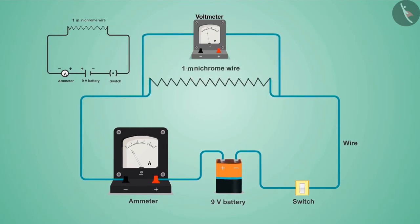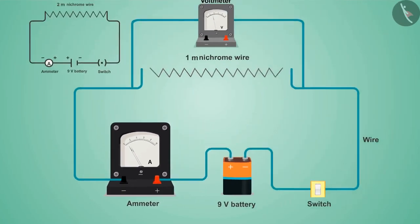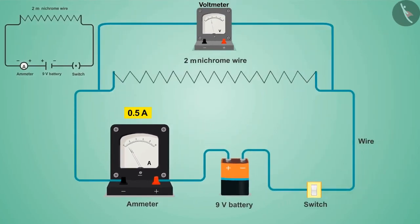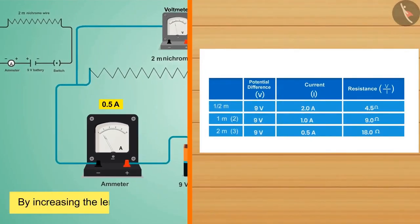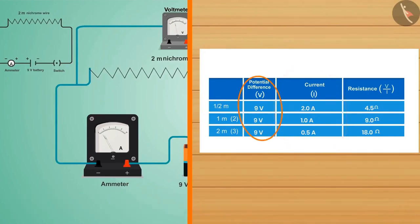Now let's replace this with a one-meter wire — what a change in the reading of the ammeter can be seen! Let us now apply the two-meter wire; the reading changed again. If you look carefully, you will find that by increasing the length of the wire, the value of electric current is decreasing, but the potential difference is constant. This means that the resistance in the circuit is increasing.